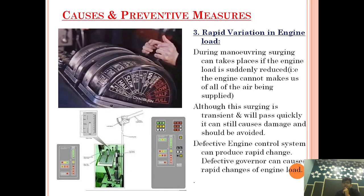The third cause is rapid variation in engine load, which can happen during maneuvering. If the engine load is suddenly reduced, or if during maneuvering we move suddenly from slow ahead to full ahead, the air fluctuation may generate a condition where surging occurs. Although this surging is transient in nature and will pass, it can still cause damage and should be averted.